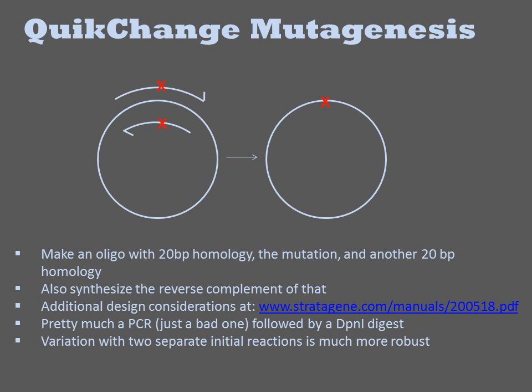After the PCR, the template DNA is degraded with DpnI due to the presence of dam methylation, such that all that remains in the mixture is the synthetic product. This is then introduced into E. coli by transformation.